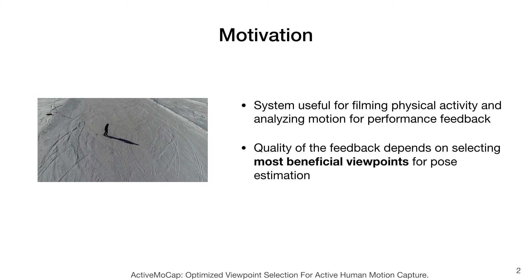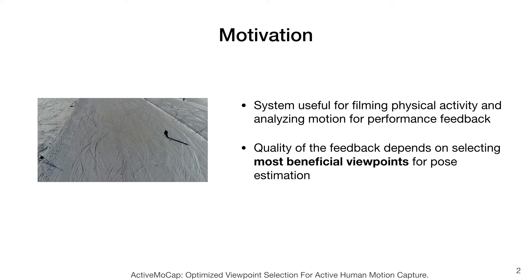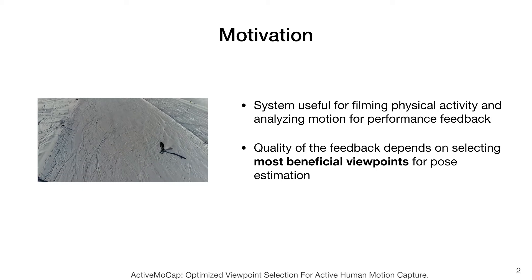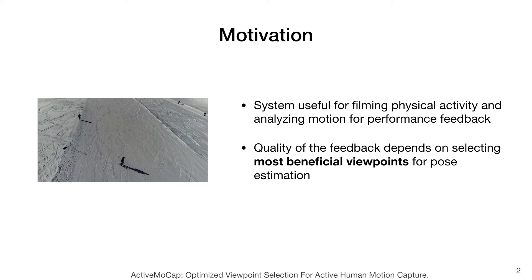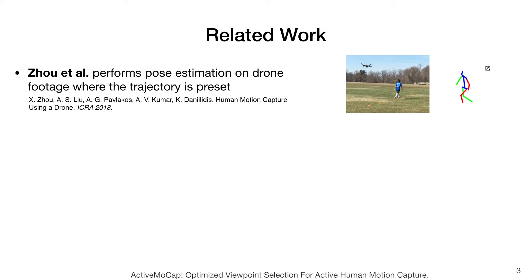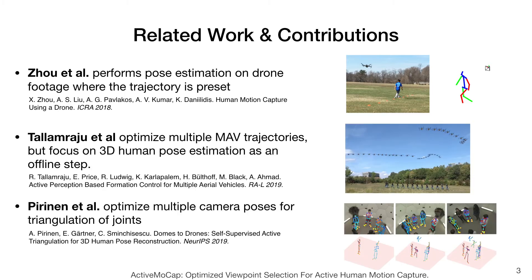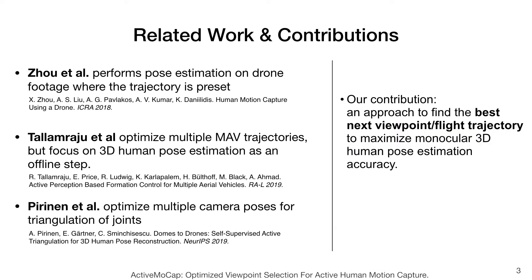Such a system is important because, when using only one camera, the quality of such feedback will strongly depend on selecting the most beneficial viewpoints for pose estimation. Existing works either perform 3D human pose estimation without selecting the viewpoint actively, or do not focus on optimizing for monocular 3D human pose estimation. Our contribution is an approach that aims to find the best next viewpoint to maximize monocular 3D human pose estimation accuracy.